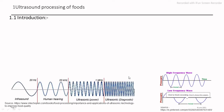What is meant by ultrasound processing of food? Ultrasounds are sound waves with frequencies greater than 20 kilohertz. The human hearing range is 20 hertz to a maximum of 20 kilohertz. Above this 20 kilohertz frequency, sound waves are called ultrasonic waves, and these ultrasonic waves are used in the food processing industry.